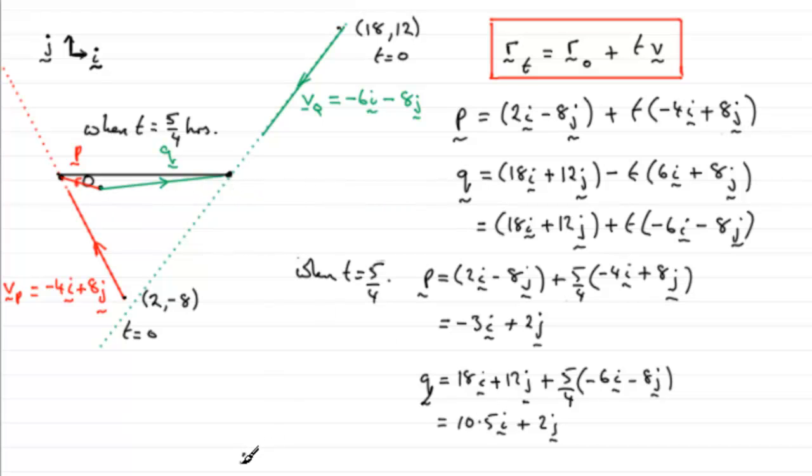So we can wind this up by saying, therefore the distance between P and Q is just going to be equal to, well, we've got three units to the left here and we've got 10 and a half units to the right. So it's just going to be 3 plus 10.5, and that's going to equal 13.5 kilometers.